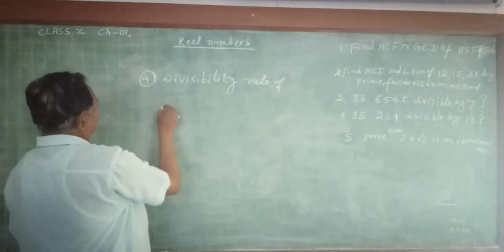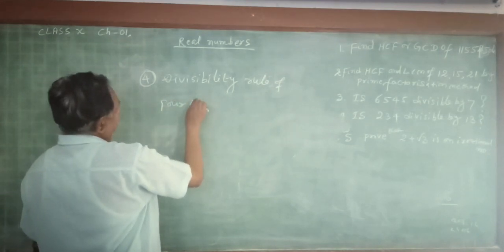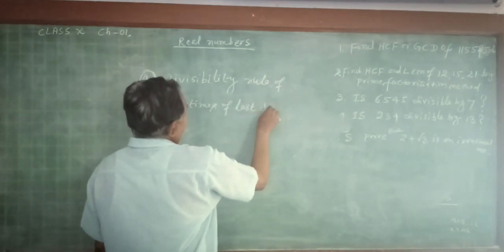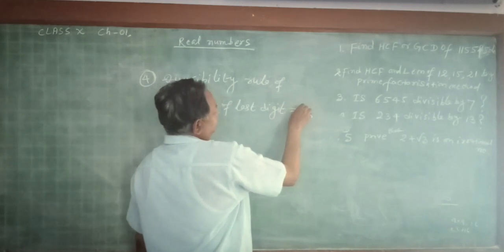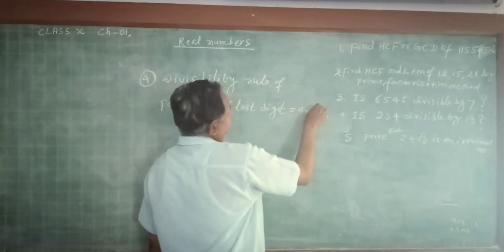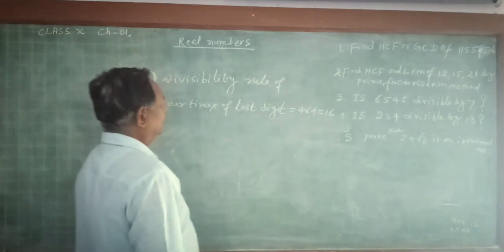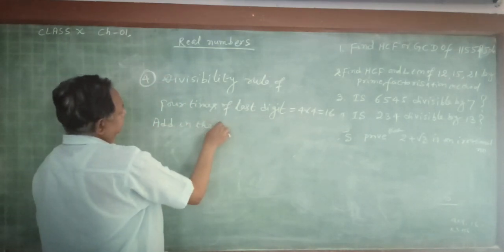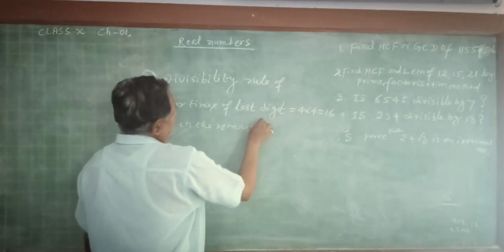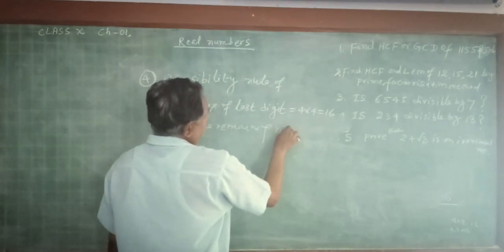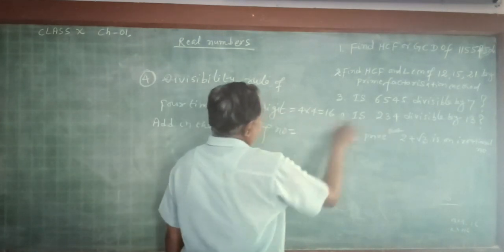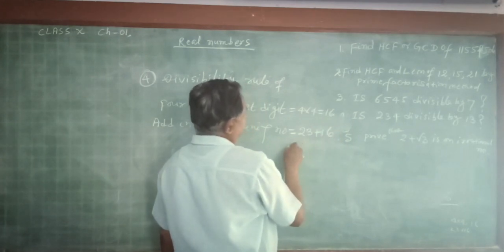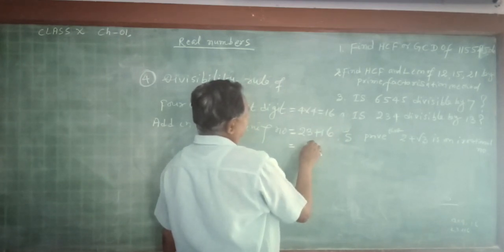So make 4 times of the last digit: 4 × 4 = 16. Add in the remaining number: 23 plus 16, which is equal to 39.